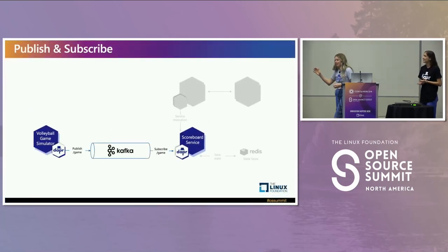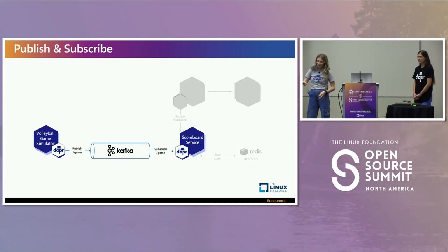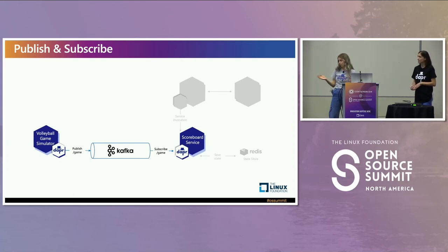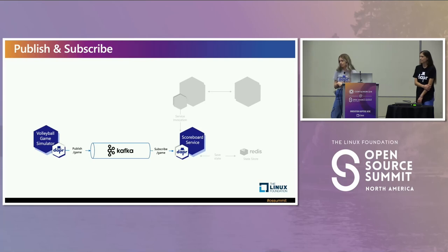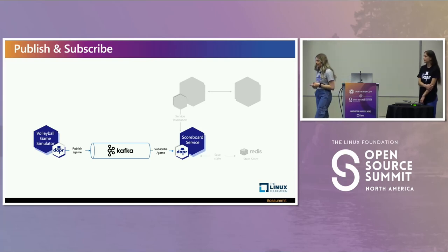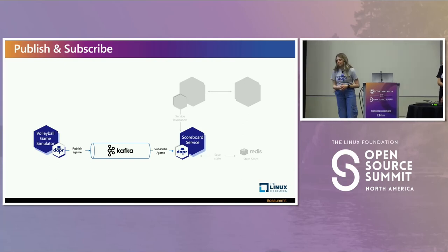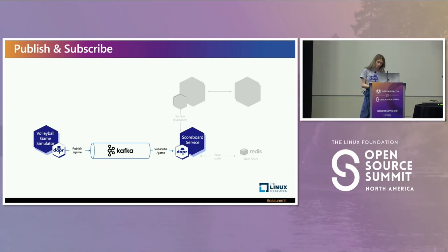So I'm going to talk about the DAPR publish and subscribe API. As Sam mentioned, the volleyball game simulator is simulating people playing volleyball — let's say it's a tournament — and they are publishing onto the game topic. In this case it's a Kafka broker, but I'll talk about all the different brokers that DAPR enables. We have the scoreboard service subscribed to the game topic and then saving this within a database. Both are enabled with DAPR and both use a sidecar.